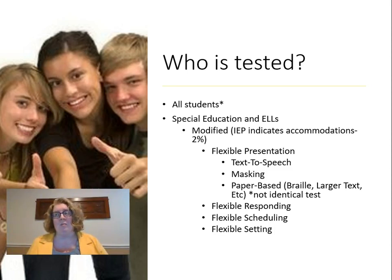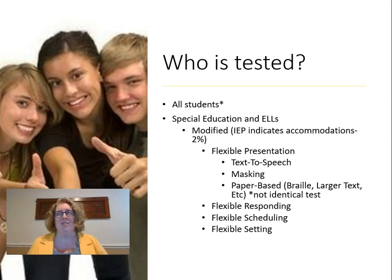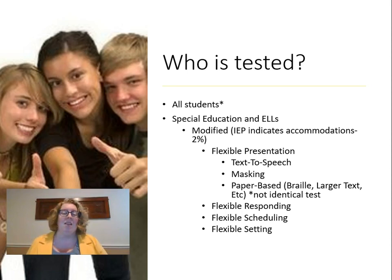We can have modified tests when an IEP includes accommodations, accounting for about 2% of the population. Modifications might include flexible presentation — such as text-to-speech on the computer-based test for certain parts, like the math test, but not reading comprehension. We can also have masking, making different parts of the test different colors. A student who needs braille would be given a paper-based test, though that isn't identical to the regular test since it wouldn't include technology-enhanced items. For larger text, we can increase text size on the computer for an equivalent test.